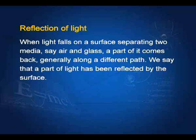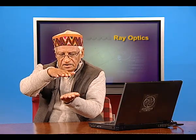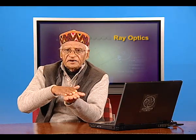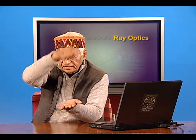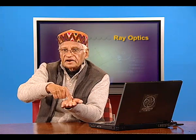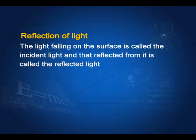The first thing is reflection of light, which is very familiar. When light falls on a surface separating two media, light comes and changes its path, going in another direction — we say the light has been reflected. The light falling on the surface is called the incident light, and that going in the other direction is called the reflected light.